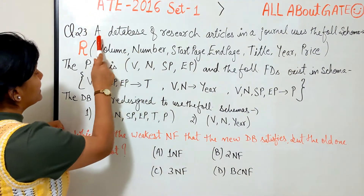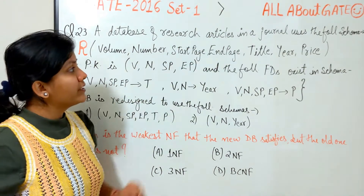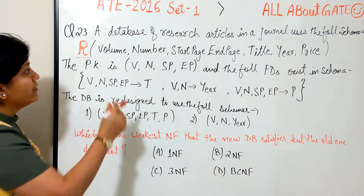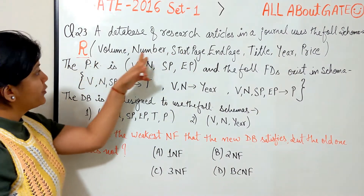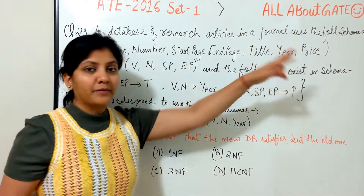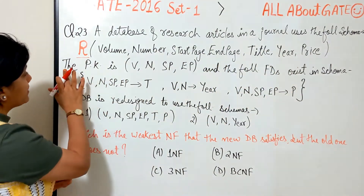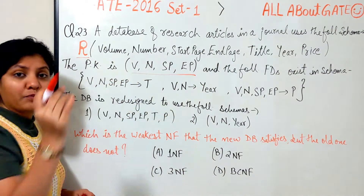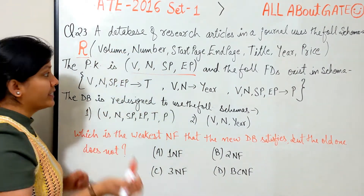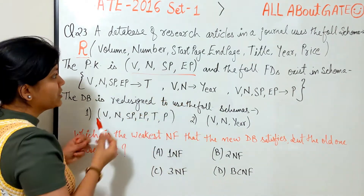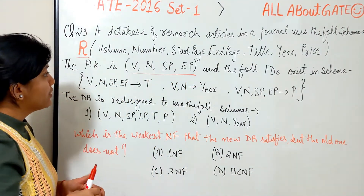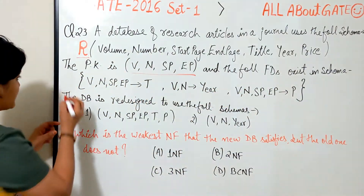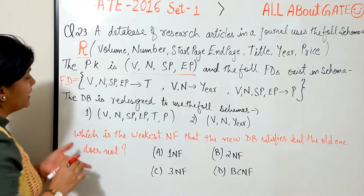The question number 23 from Set 1 of 2016 states: a database of research articles in a journal uses the following schema. This is a relation R which has seven attributes — volume, number, start page, end page, title, year, and price. The primary key of this relation is volume, number, start page, and end page — these four together. The following functional dependencies exist in the schema, and this is your FD set.